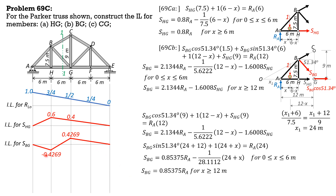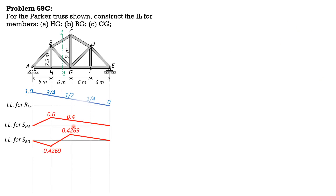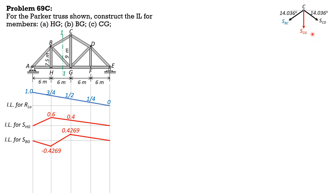That's the influence line for S_BG. Next, for CG, we apply the method of joints at C. The value of x can be any value, but before we can solve for CG we need to know S_BC. So we draw the influence line for BC first. That is derived by considering the free body diagram to the left of section 1-1 and summing moments about G using the principle of transmissibility to simplify.